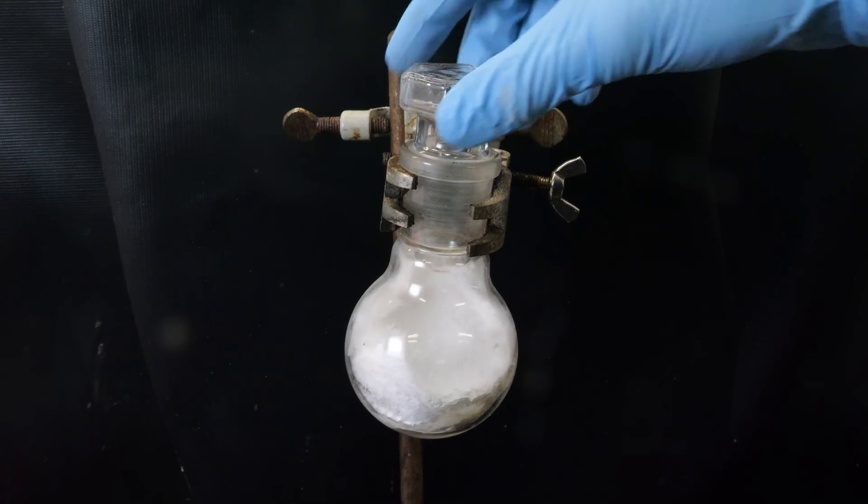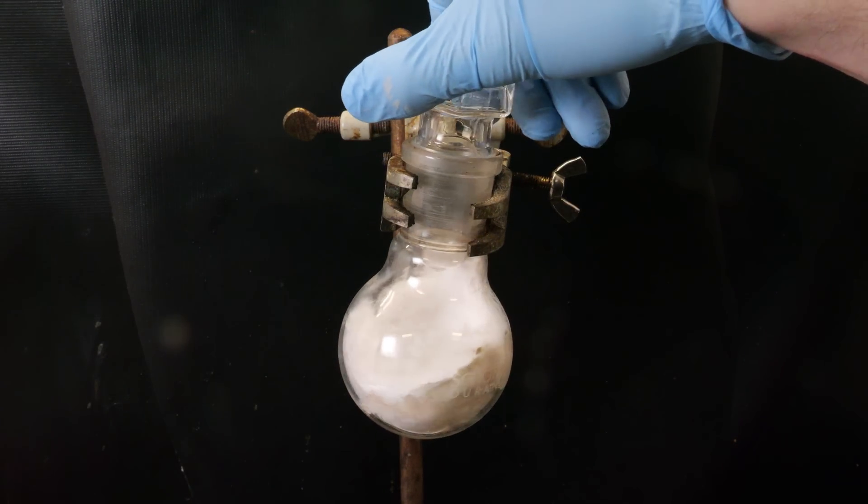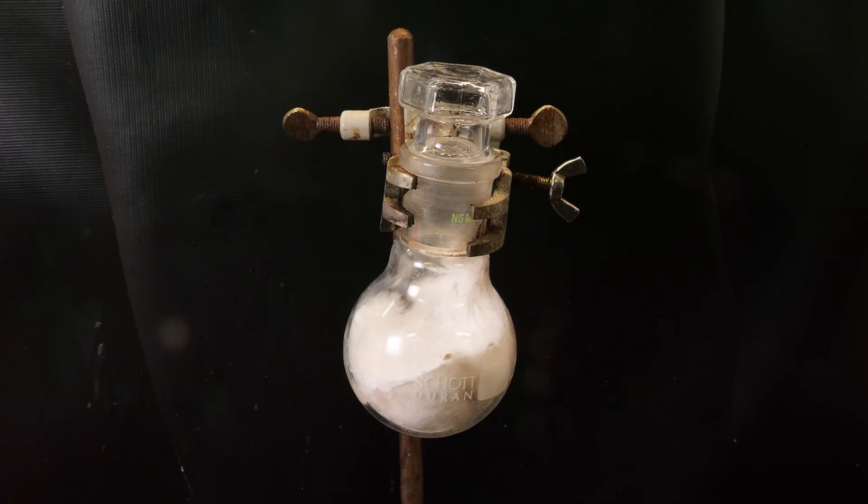Since sulfur trioxide is a master of destruction, it also destroys traces of grease left on the joints and will turn them into liquid black tar, of which some dripped into the receiving flask, giving a slight discoloration. However, it shouldn't matter for my reaction, and it's actually quite common for oleum as well to be discolored because of some tar impurity.